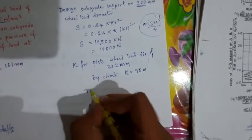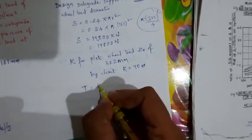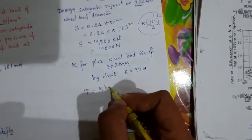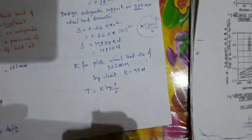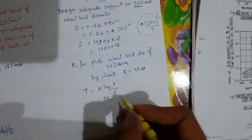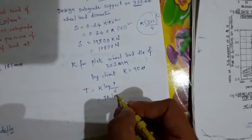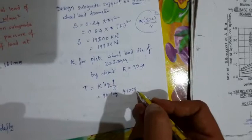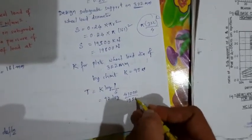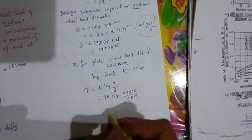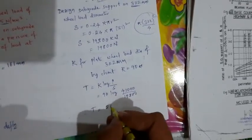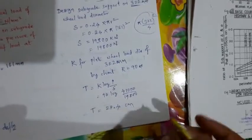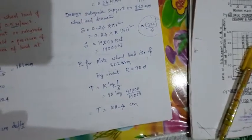So input in the formula T is equal to K into log to the base 10 P by S. So K is nothing but 90, log of P is nothing but 41 kilonewton. So here you get 28.4 centimeter as thickness of gravel base.